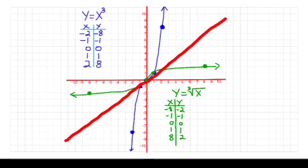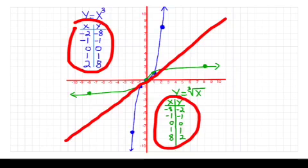But look at the values of x and y here and compare them to the values of x and y here. The x column, negative 2, negative 1, 0, 1, 2, is the y column in the second one. Negative 2, negative 1, 0, 1, 2, and vice versa. The y column in the x cubed is the x column in the cubed root of x, showing that they are inverses.